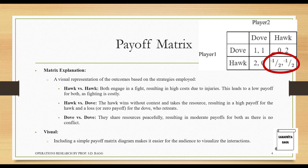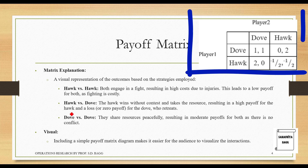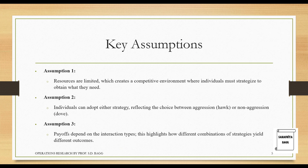When two Hawks fight, no one gets anything except injuries. A simple payoff matrix diagram makes it easier to visualize the interactions. Key Assumption 1: resources are limited, which creates a competitive environment where individuals must strategize to obtain what they need. Every resource in this world is limited and every individual has to be strategic enough to obtain resources in this competitive world.